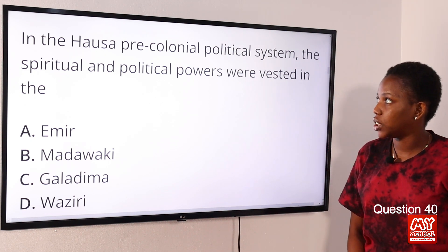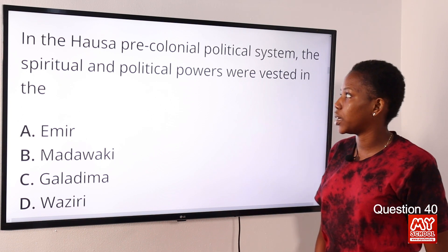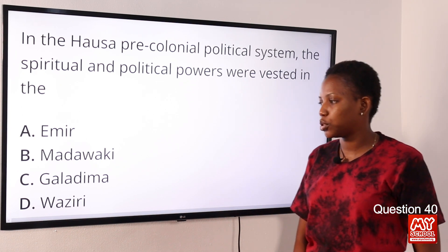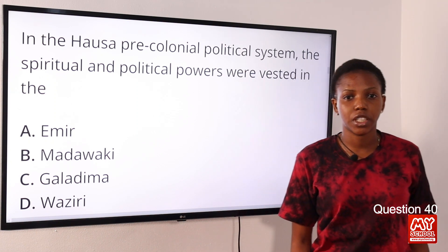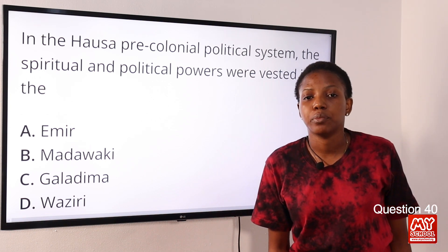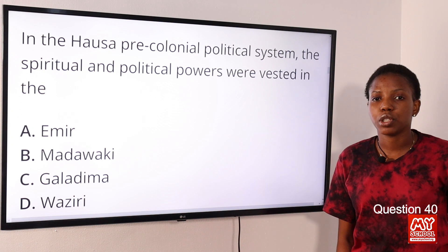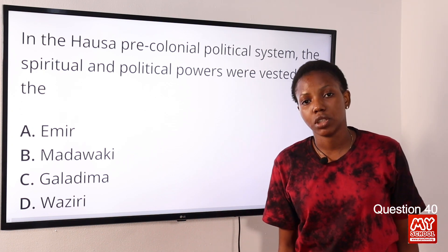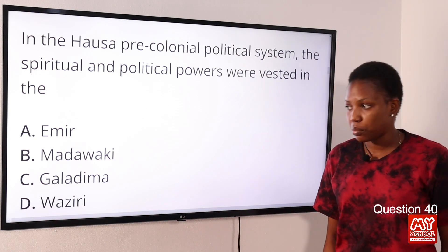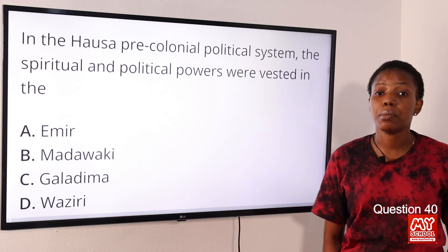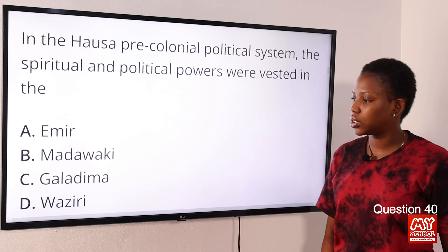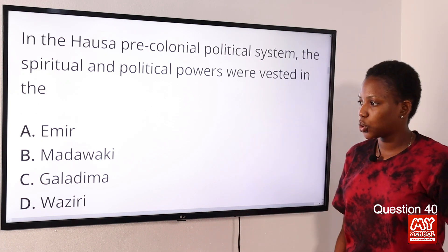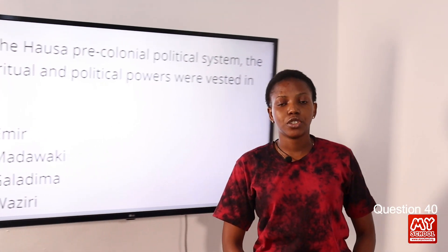Question 40: In the Hausa pre-colonial political system, the spiritual and political powers were vested in the — Option A: Emir. Option B: Madawaki. Option C: Galadima. Option D: Waziri. The answer is Option A, Emir. The Emir held both spiritual and political power — he could make laws, enforce law, and maintain peace and order. The Madawaki was the commander of the army, Galadima was in charge of the capital, and Waziri was the head of all officials.